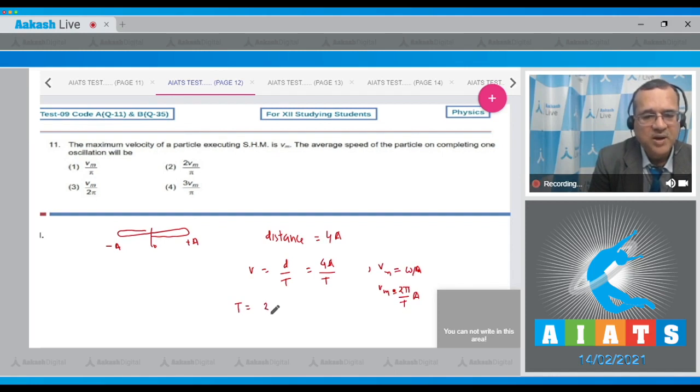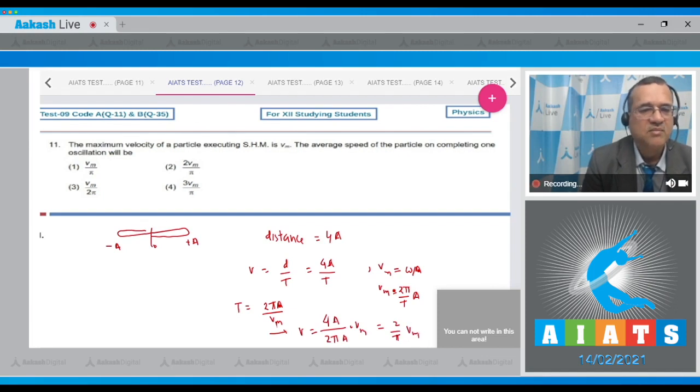So Vmax is equal to 2 pi by capital T into a, or T is equal to 2 pi a divided by Vm. Fill in this equation. Therefore V becomes equal to 4a divided by 2 pi a into Vm, so that is equal to 2 by pi into Vm. The correct option is 2 Vm by pi. The answer is 2.